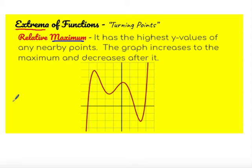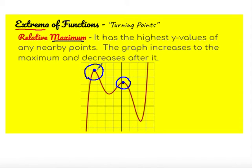You're looking for the peaks of the mountains if you look at it as a mountain range. The graph increases to the maximum and decreases after it. When I look for the peaks of the mountains, there's a peak and there's a peak. Those are relative maximum points — because if I plot those peaks, all points around them are lower. As the definition reads, our graph increases to the maximum and then it decreases afterwards.